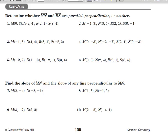Hey everybody and welcome to the second page of assignment M. It's on page 138. We'll talk briefly about how to do these problems. For numbers 1 through 6, we are to determine whether MN and RS are parallel, perpendicular, or neither.